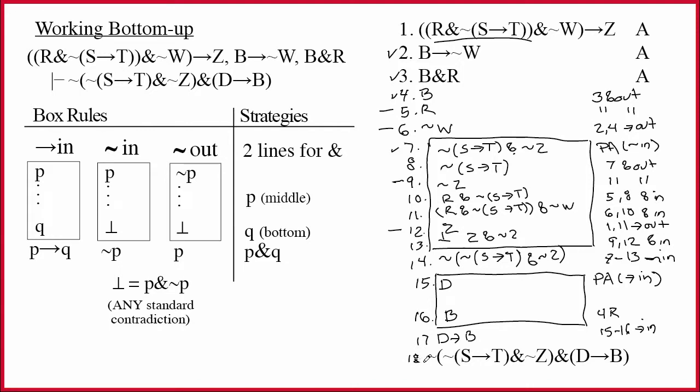Let's call this line 18. And remember, when we were doing two lines for ampersand, we penciled in the two halves. They now have line numbers, 14 and 17. So that's all we have to do is cite those two line numbers, 14, 17. And of course, we're building an ampersand. So it's going to be ampersand in. And we are done. I hope you've enjoyed this proof. Good luck with the practice.